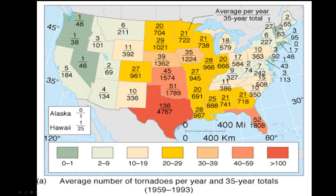The problem with this map is that it is aggregating the data to the state level. This phenomenon is known as the Modifiable Areal Unit Problem, or MAUP. It's a source of statistical bias that can change the results of your hypothesis. We're lying with our map because we're aggregating point-based measures — tornadoes happening in single places — out into districts or states.